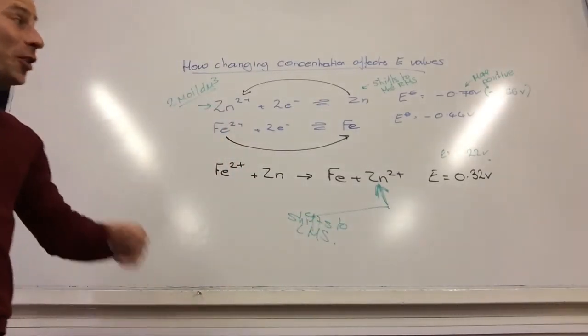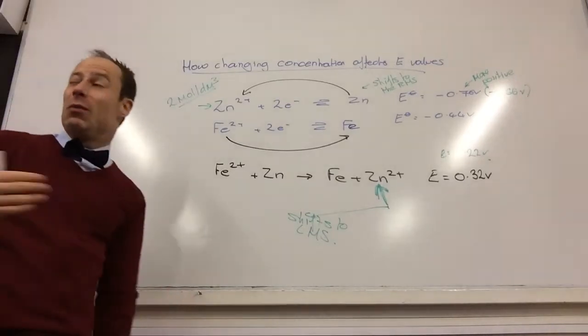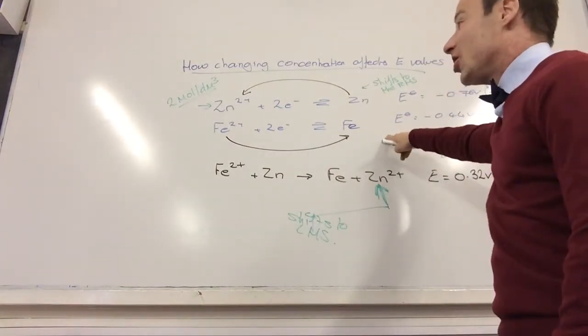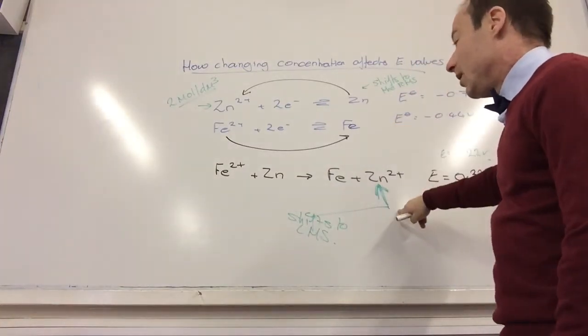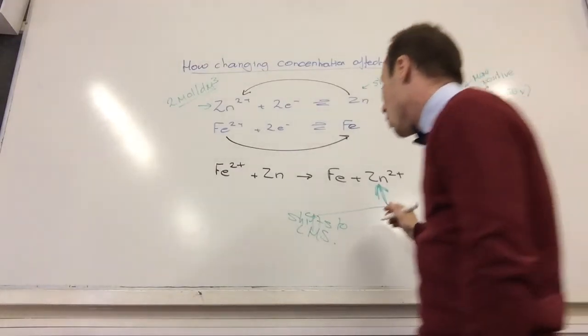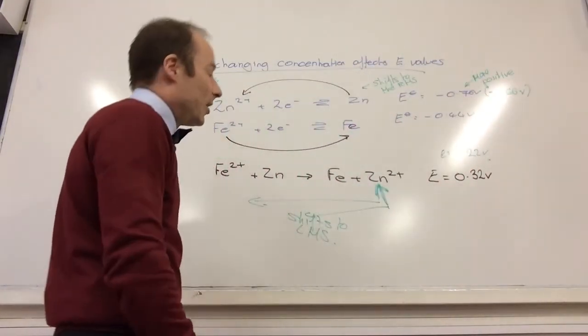It's shifting the equilibrium. So this all links nicely with equilibrium as well. This is showing, this is giving me numbers and showing why Le Chatelier works, why it's becoming less feasible and why it now shifts to the left-hand side.